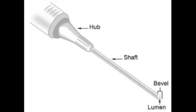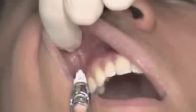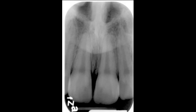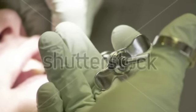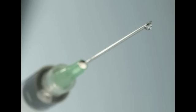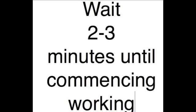Advance the needle until the bevel is above the apex of the target tooth. In some cases, this is only a few millimeters — determine the actual depth for the patient. Aspirate. If negative, slowly deposit approximately 0.6 mils over 20 seconds. Aspirate several times during the procedure. Slowly withdraw syringe and recap the needle. Wait two to three minutes before commencing work.